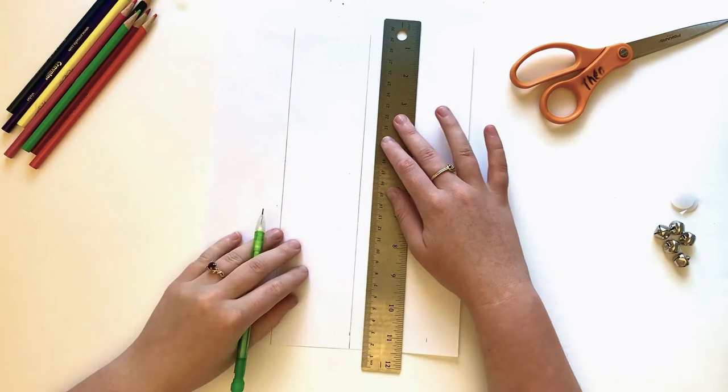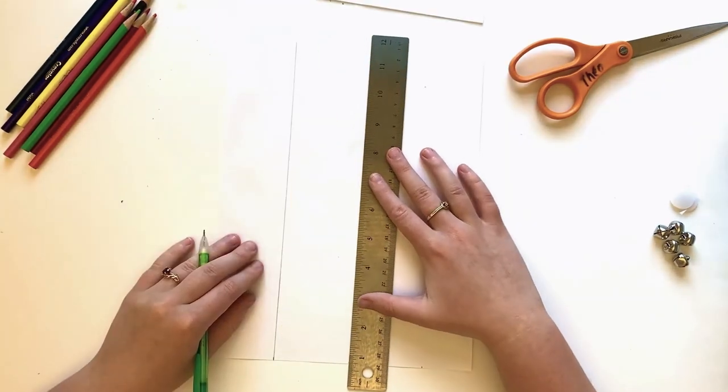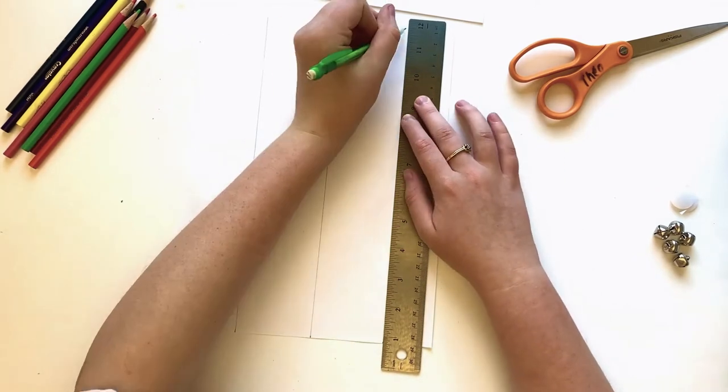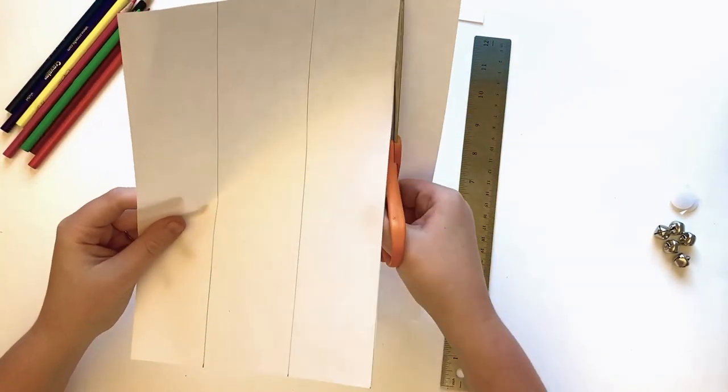Use your markings as guides to draw three vertical lines down the longest part of your sheet of paper, using a ruler to help you create straight lines. Repeat these steps on your second sheet of paper.